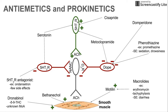Those two red neurons — one is dopamine-triggered, the other is serotonin-triggered. The 5-HT3 receptor neuron is inhibiting that acetylcholine neuron, so those are going to inhibit the smooth muscle contractions that lead to gastric motility.